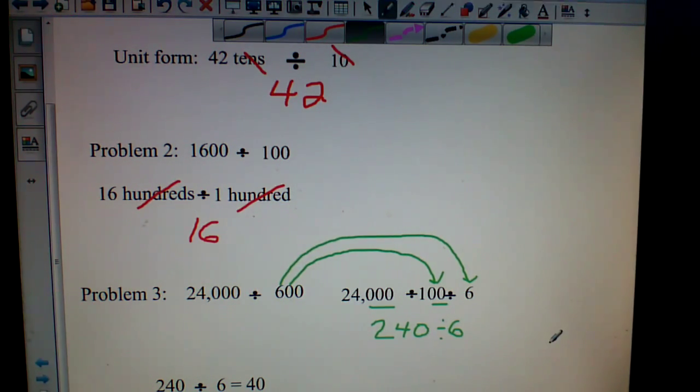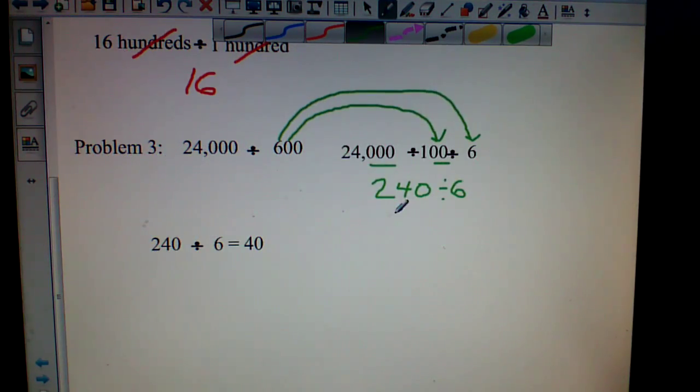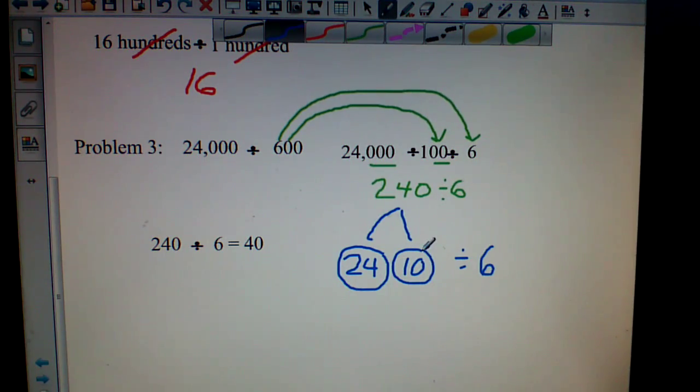So we're left with 240 divided by 6. And what we need to do here is then think about what we have in terms of multiples of 10. And we can take the 240 and break it up into 24 and 10 divided by 6. These are called number bonds. It's like factor trees. So 240 divided by 10 is 24 times 10 divided by 6.